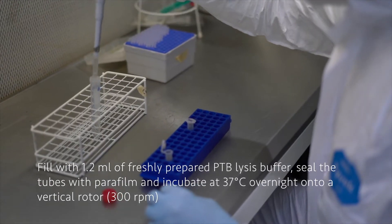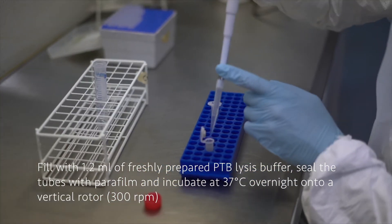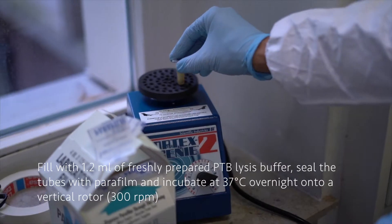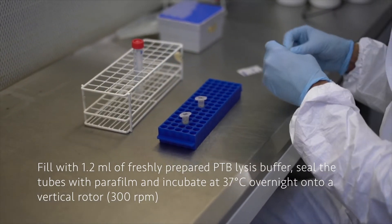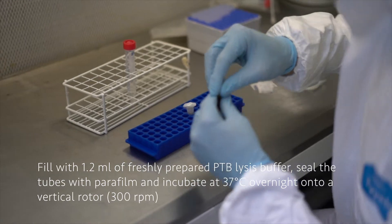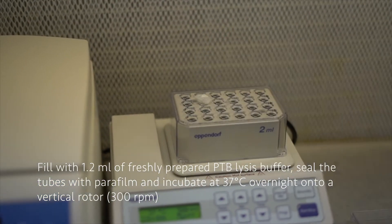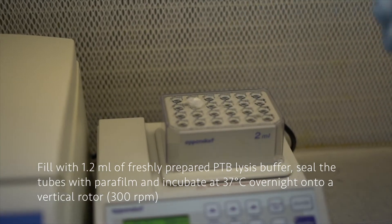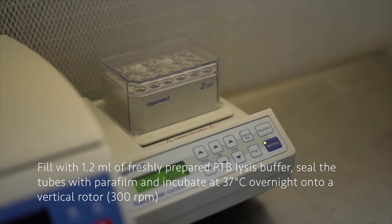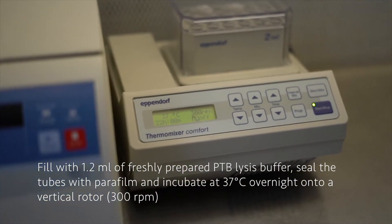Now we are going to place 1.2 milliliters of the freshly prepared PTB-DTT buffer on the samples. I'm going to vortex them shortly, then we are going to seal the tubes with parafilm and put them onto the thermoblock. The thermoblock is already set at 37 degrees and once we are ready we can activate it so that it's rotating at 300 rpm. We are going to leave it incubating overnight.